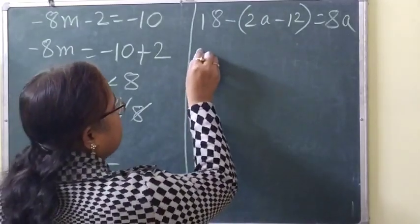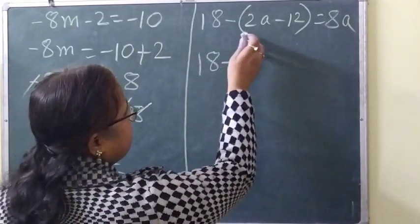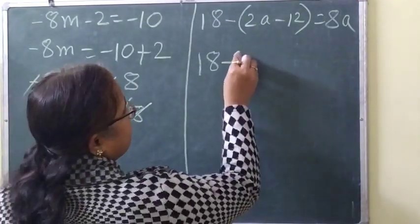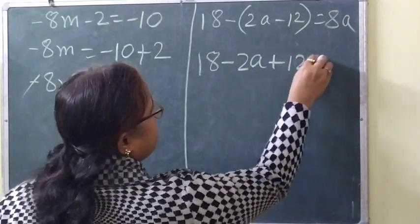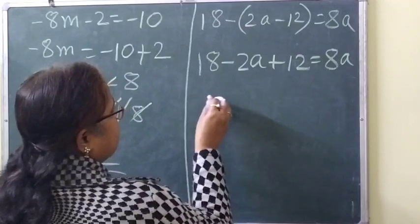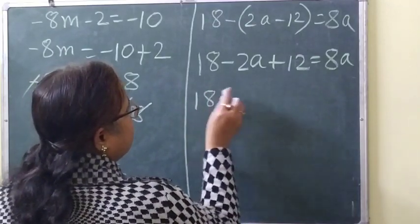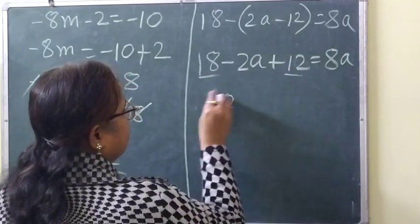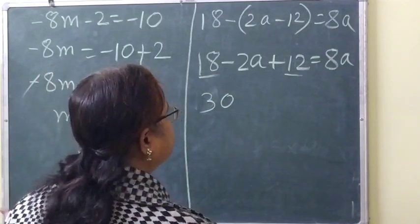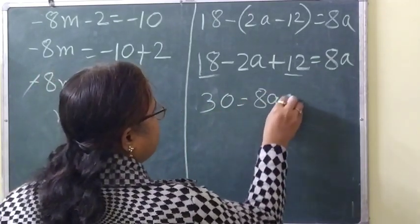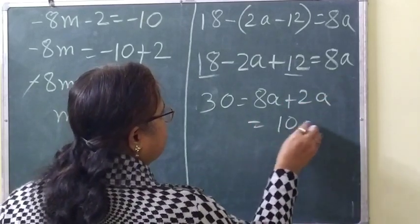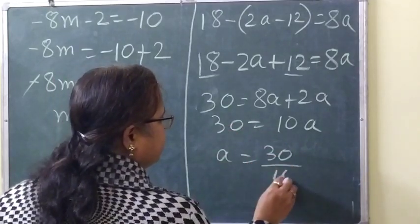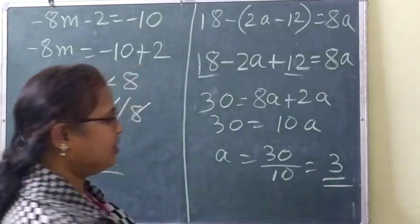For the bracket question: 18 minus (2a minus 12) equals 8a. When a minus sign is before a bracket, we change all the signs inside: 18 plus 2a plus 12 equals 8a. So 18 plus 12 is 30, and 8a minus 2a is 6a — wait, that gives 30 equals 8a plus 2a equals 10a. So a equals 30 by 10, which is 3.